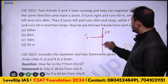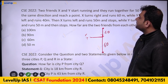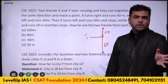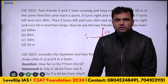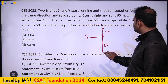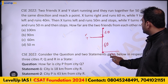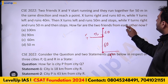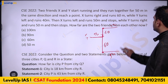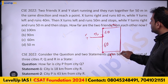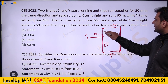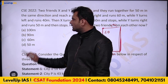Starting together, X turns right and runs 60 meters, then turns left and runs 50 meters and stops. Y turns left and runs 40 meters, then turns right and runs 50 meters and stops. The figure forms a rectangle. The distance between them is 60 plus 40, which equals 100 meters.